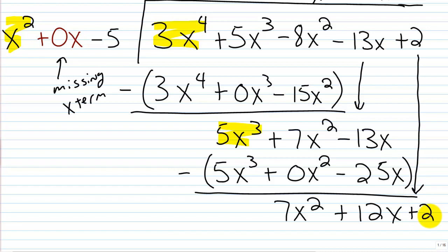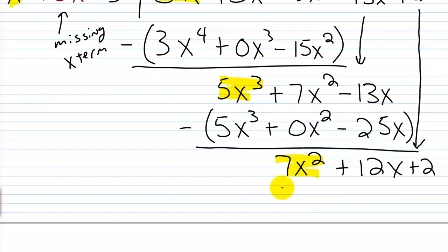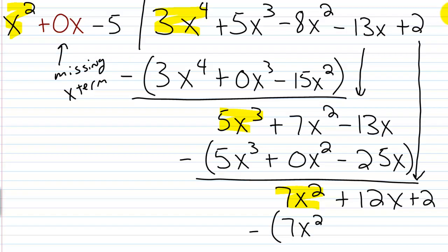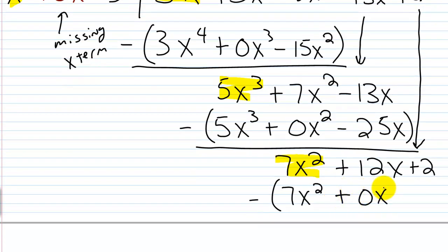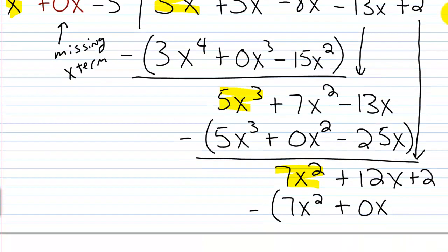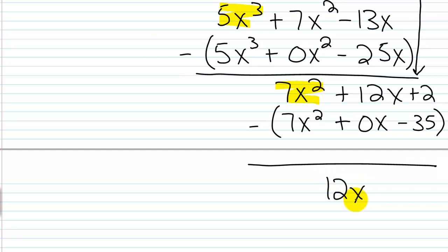One more division: x squared goes into 7x squared how many times? It goes in 7 times, so plus 7. Multiply: 7 times x squared is 7x squared; 7 times 0x is 0x; 7 times negative 5 is negative 35. Subtracting: 7x² minus 7x² is 0; 12x minus 0x is 12x; and 2 minus negative 35 is 2 plus 35, which is 37. So we end up with 12x plus 37 as our remainder.